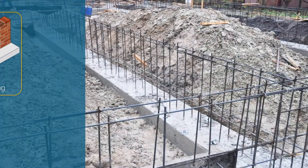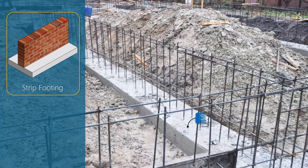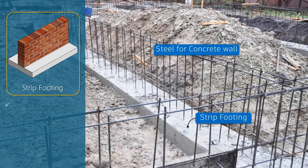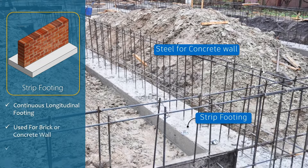The next type of shallow foundation is strip or wall footing. It is a continuous longitudinal strip of reinforced concrete that serves as a foundation for a brick wall or concrete wall.